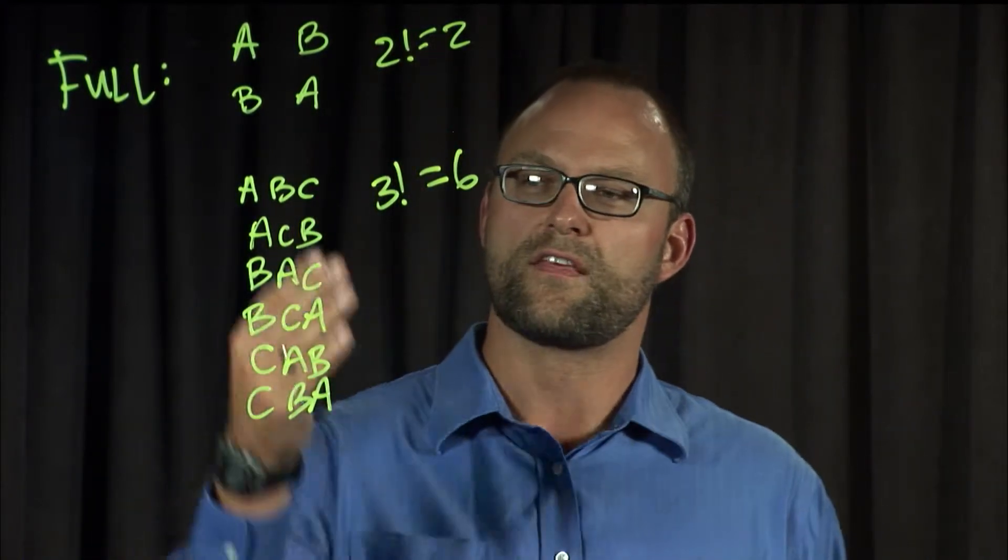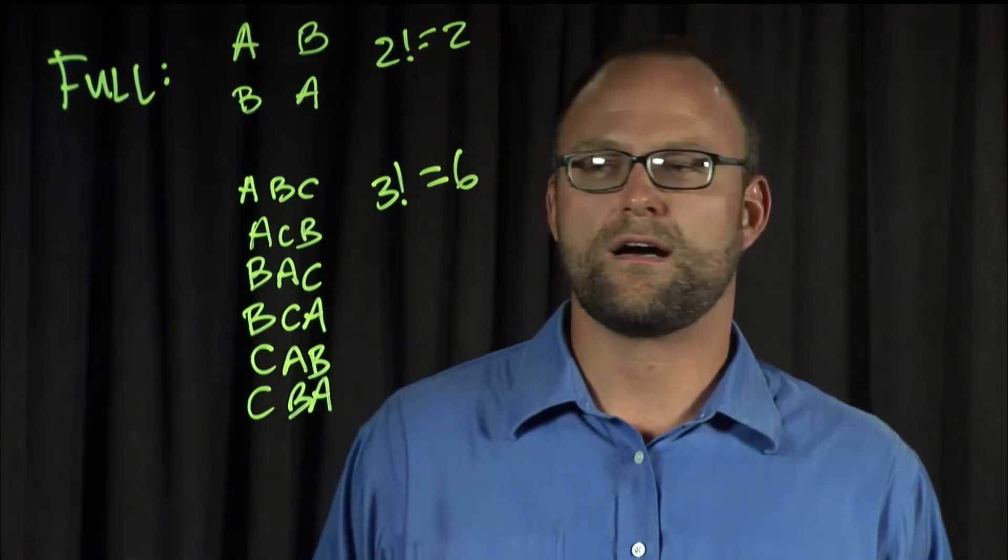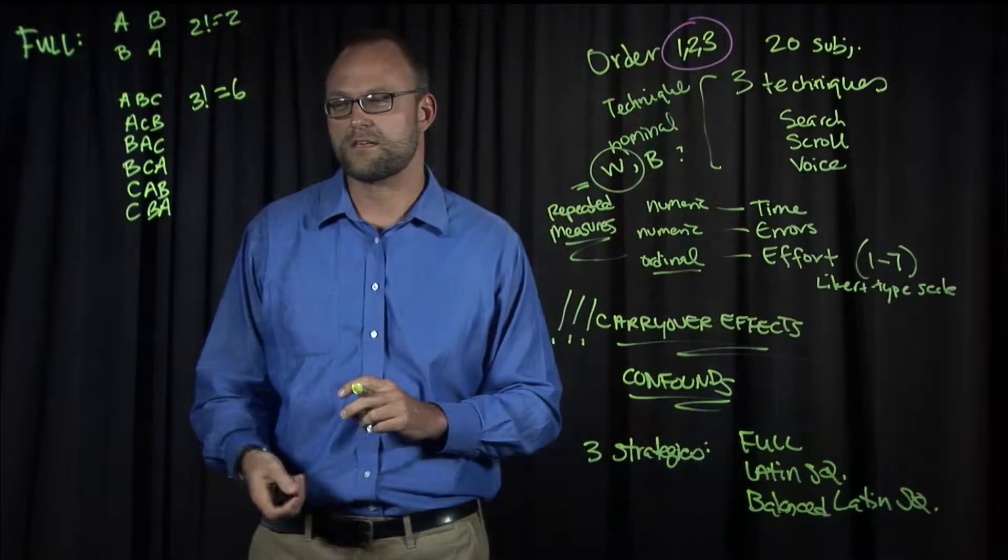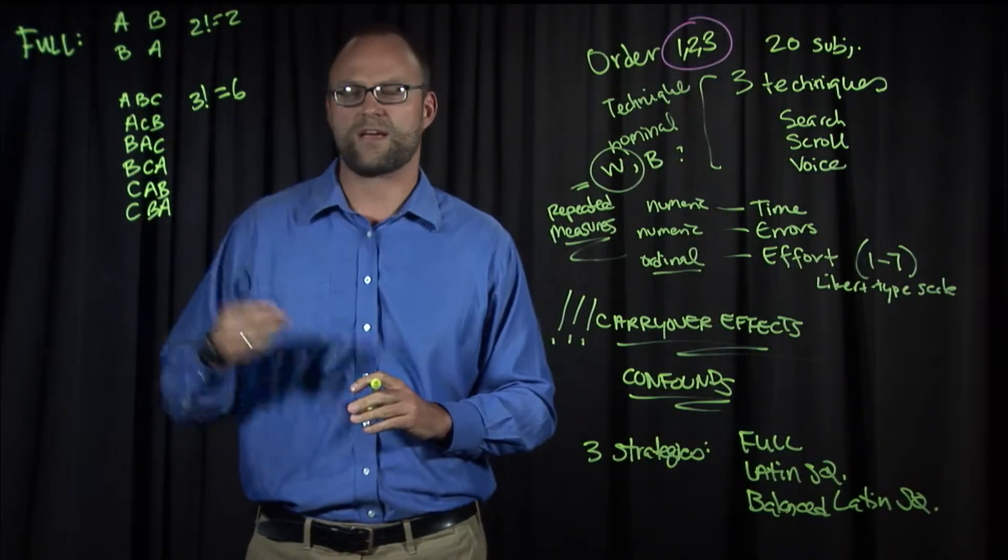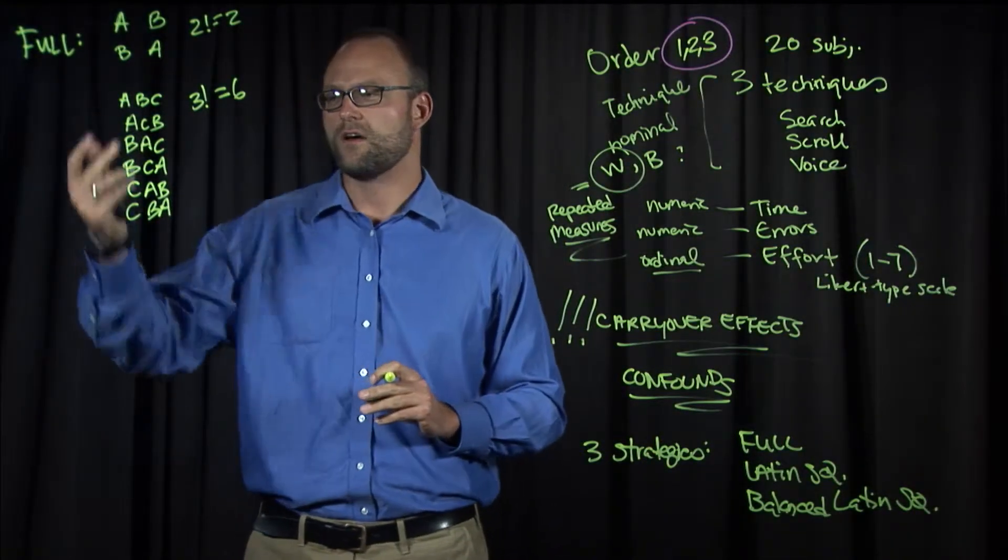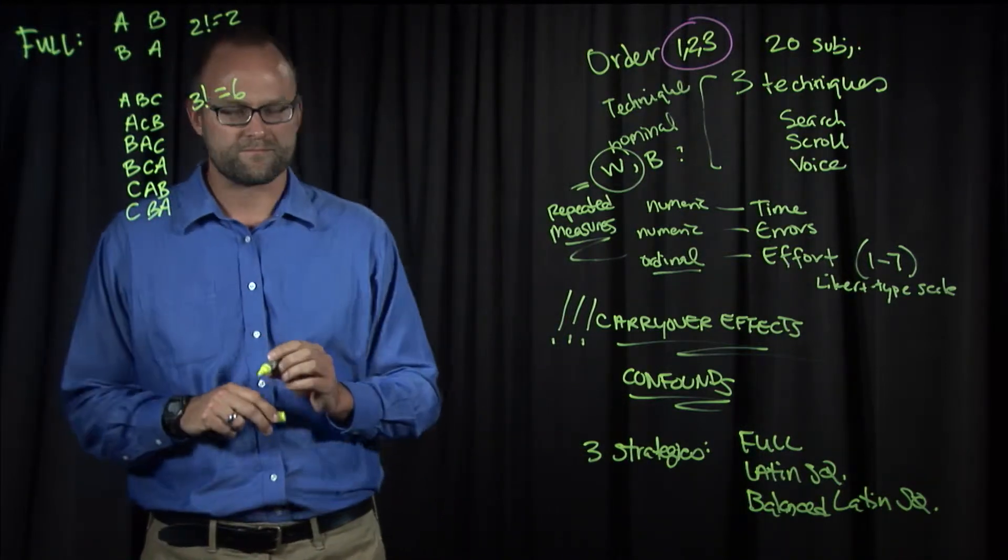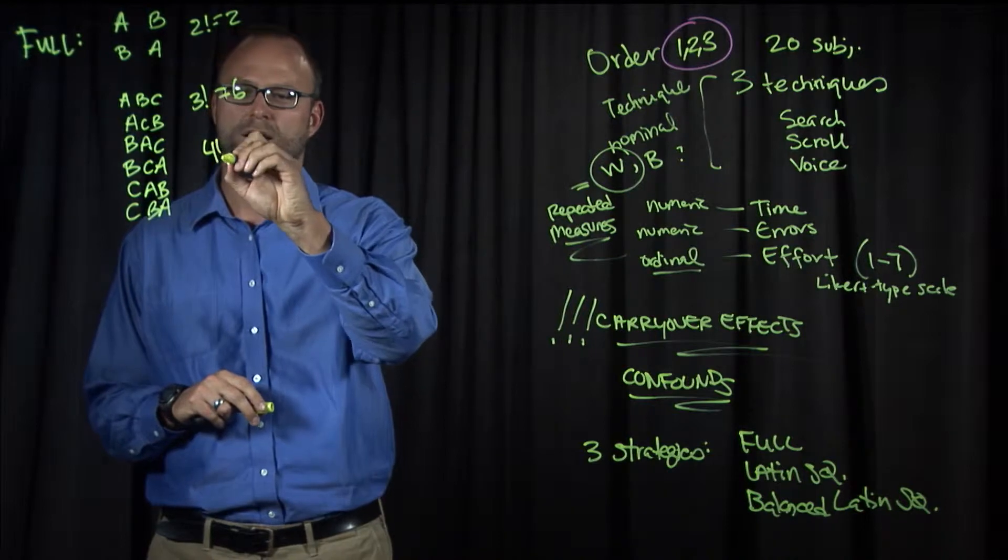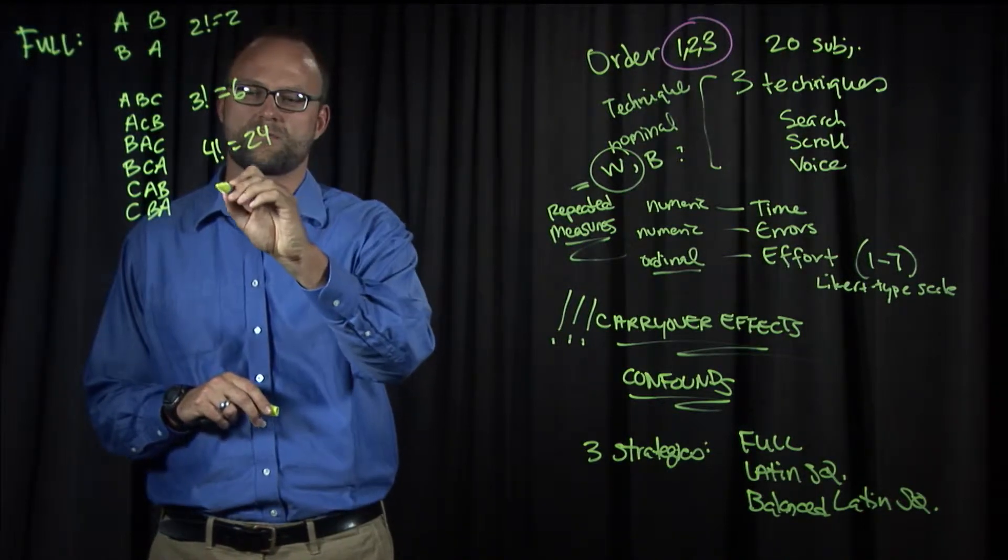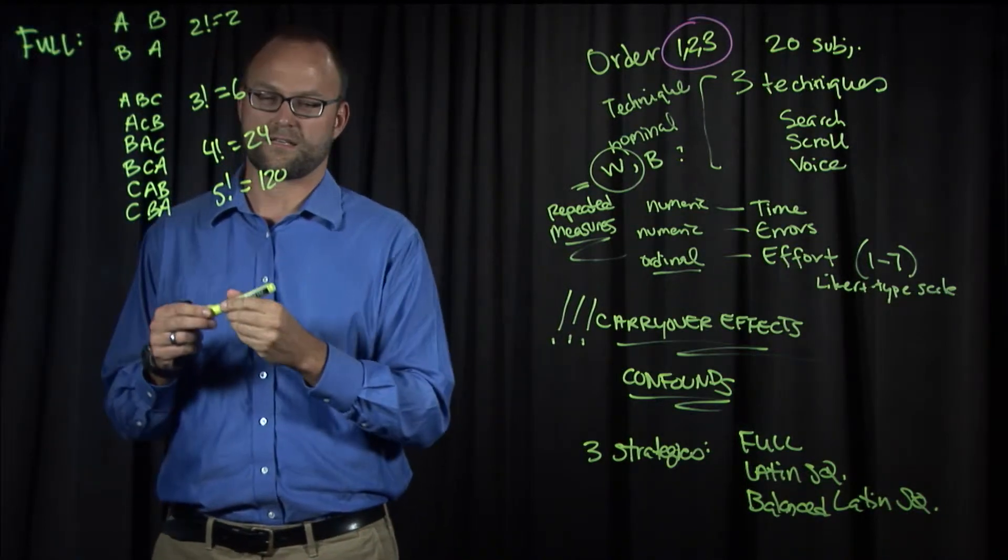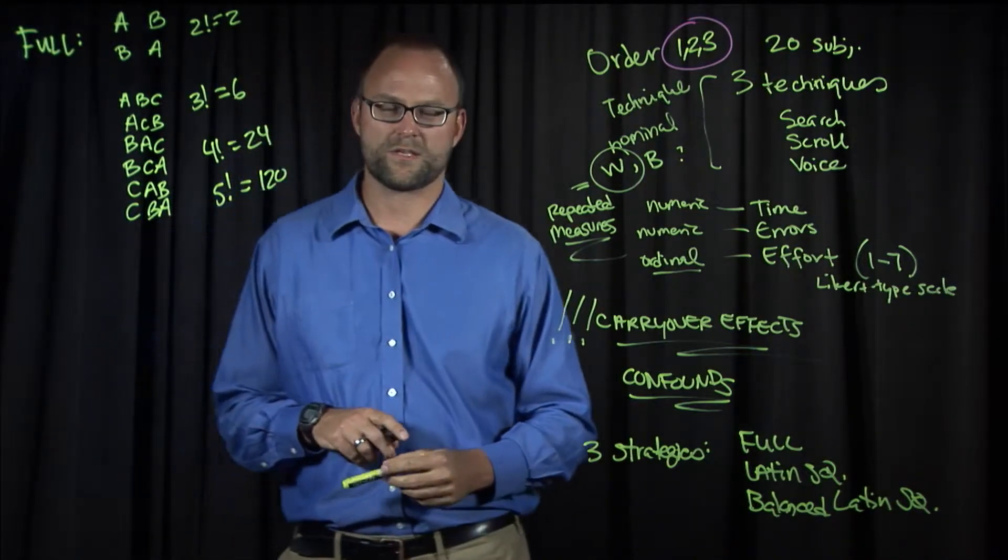We need a study that had subjects that are multiples of six in numbers. So six subjects or 12 or 18 or 24 subjects to make sure we have a balanced expression across all six sequences. With four conditions, we'd need 24 sequences. With five, we'd need 120. And with six, it gets obviously very unwieldy.